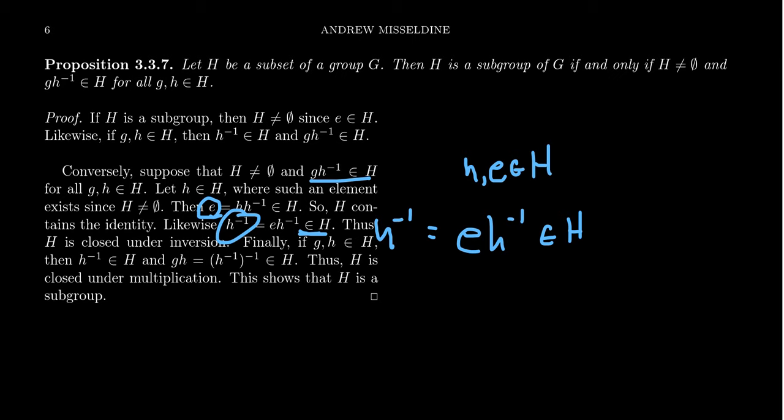Oh, two down, one to go. We got to show it's closed under multiplication. Well, what we've now done here is we've now shown that it contains e. It'll contain h. It'll contain h inverse necessarily.